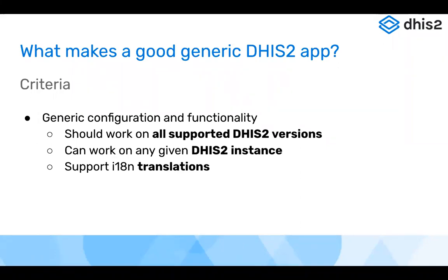There are three most important criteria required to have a generic DHIS2 application: it should work on all supported DHIS2 versions, it should work on any given DHIS2 instance, and it should support translations. I'll talk more about these three points in the next slides.